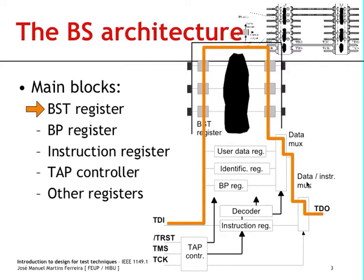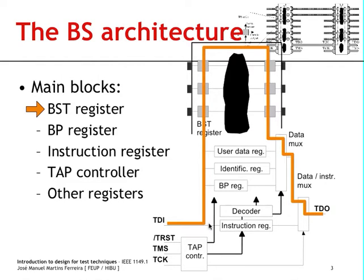The data or instruction multiplexer selects if the so-called instruction register or one of the data registers is to be placed between TDI and TDO. So when these two multiplexers are selected to operate as shown, we will have the boundary scan register placed between TDI and TDO.